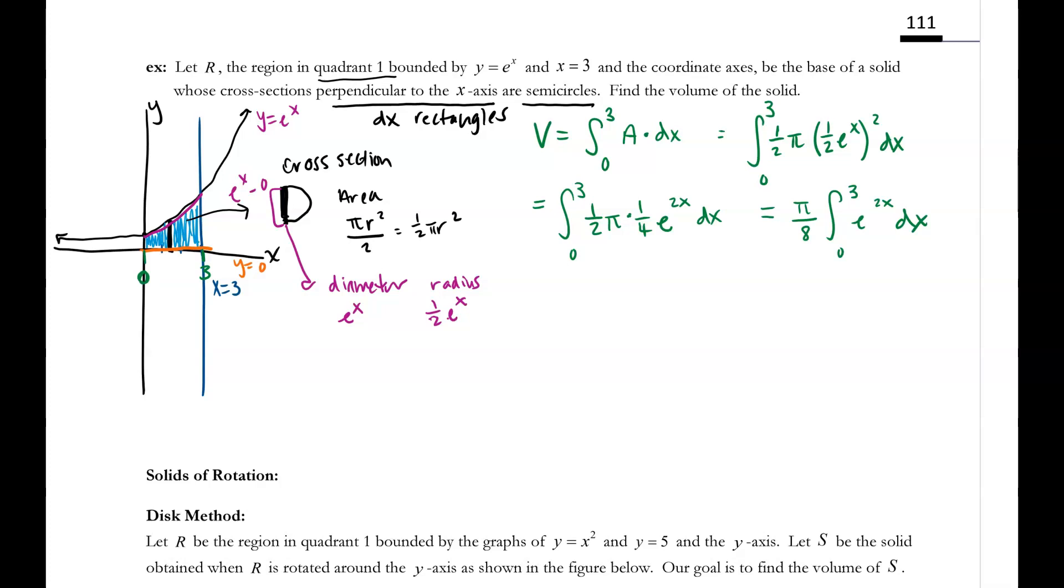So I would do a u sub here. You could maybe do this one in your head, but I would mess it up. Maybe you wouldn't. By the way, I've messed this problem up like two years in a row. This might be the first year I don't make a mistake. So if I do a u sub, I'm going to say u is 2x. Therefore, du is 2 dx. So I'm also going to go ahead and just change the limits of integration. So u of 0 would just be 2 times 0, which is 0. And then u of 3 would just be 2 times 3, which is 6.